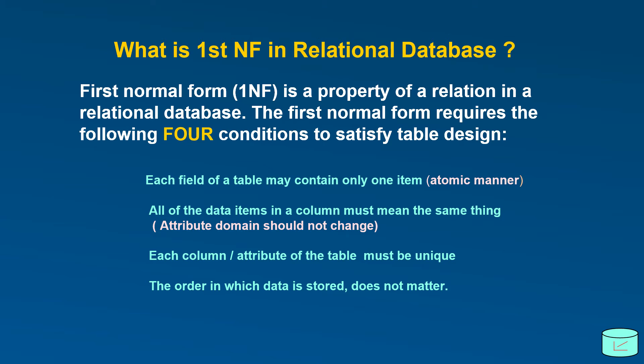Number one, each field of a table may contain only one item. Number two, all the data items in a column must mean the same thing. In other words, attribute domain should not change.